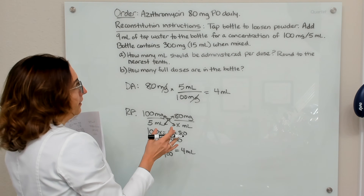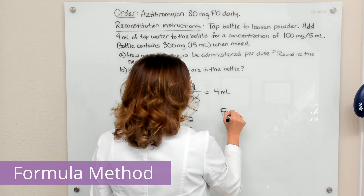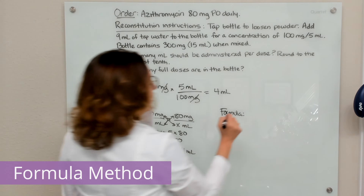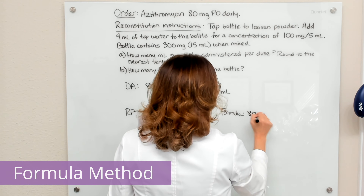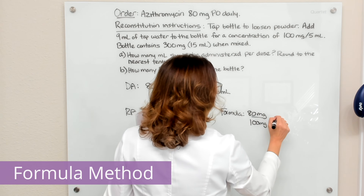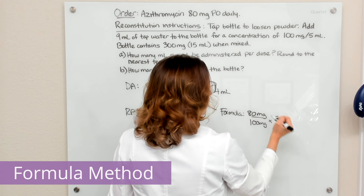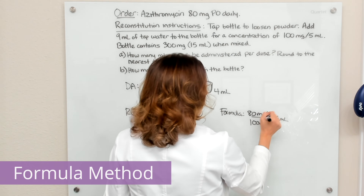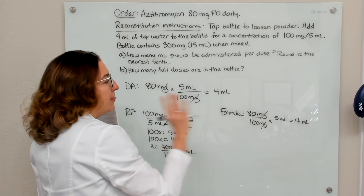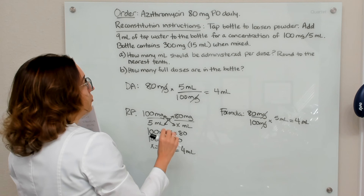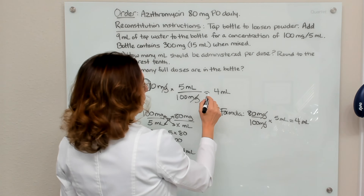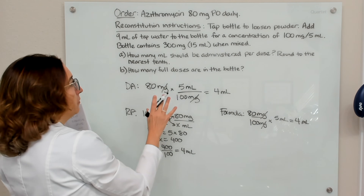We can also calculate this with the formula method. The formula method is: desired over have, times vehicle. What we desire is 80 milligrams. What we have is 100 milligrams, and the vehicle — the 5 mL of solution — is how we deliver that 100 milligrams. We cross off milligrams and calculate: we end up with 4 mL. So that is how much we are going to give the patient with each dose. This is already a whole number, so no further rounding is needed.